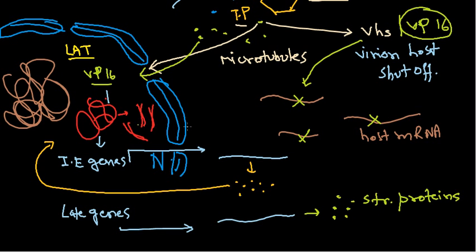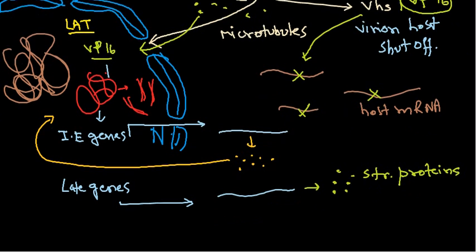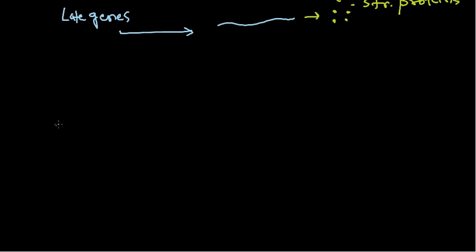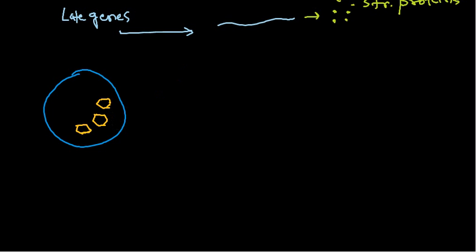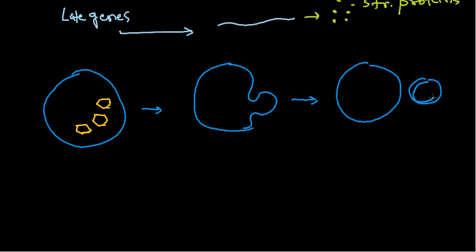Once the structural proteins and the viral DNA as genetic material are produced, they will produce a virion inside the nucleus. Assembly of all structural proteins together with the double-stranded DNA as genetic material occurs inside the nucleus. Once everything is done, the capsid bulges out from the nucleus, taking a section of the nuclear membrane with it.